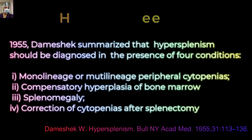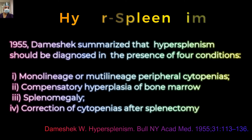Hypersplenism — in 1955, Dameshek summarized that hypersplenism should be diagnosed in the presence of four conditions: first, multi-lineage peripheral cytopenias; second, compensatory hyperplasia of the bone marrow; third, splenomegaly; and fourth, correction of these abnormalities after splenectomy.